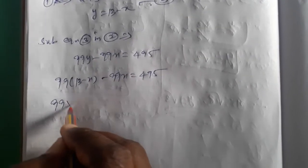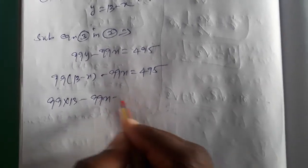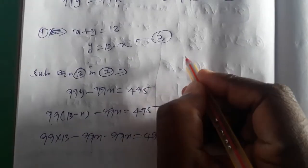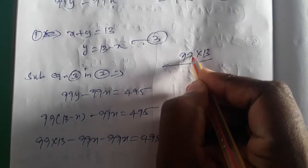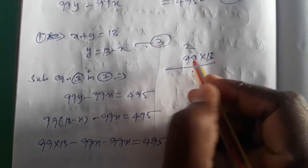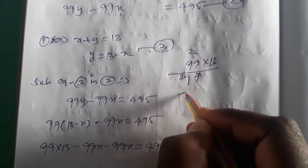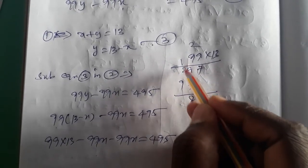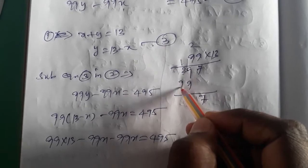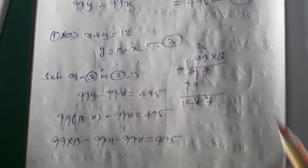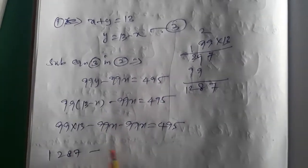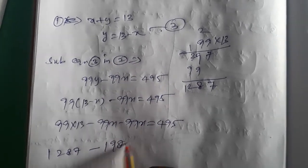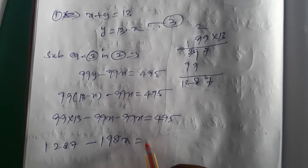99 into 13: calculating — 99 into 13 gives 1287. So 1287 minus 198x equals 495. Now solving for x: 1287 minus 495 equals 198 times x, giving 792 equals 198 into x.